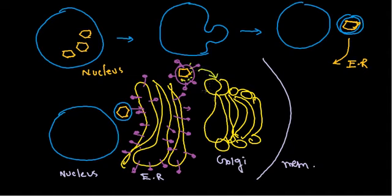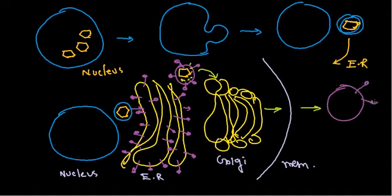After modification in the Golgi apparatus, once everything is properly processed, the virus leaves the Golgi by taking a portion of its membrane. The result is the mature, complete Herpes simplex virus particle, with spike proteins on the envelope, tegument proteins inside, and the capsid containing the viral DNA.